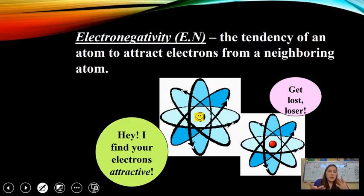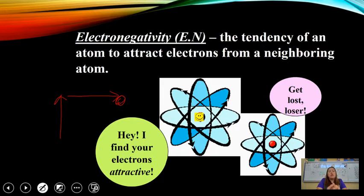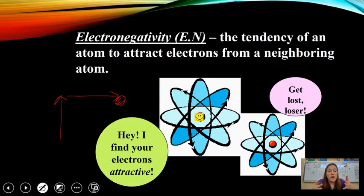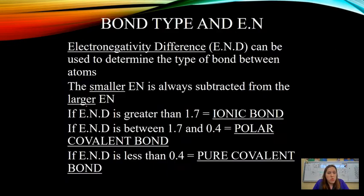Everything is based on electronegativity. On the periodic table, electronegativity increases from bottom to top and from left to right. Things on the top right want to take electrons — they are more attractive and have a tendency to attract electrons from a neighboring atom within a bond. When something has a high electronegativity, it's going to pull electrons. Electronegativity is really what determines the type of bond — that's the most important component.